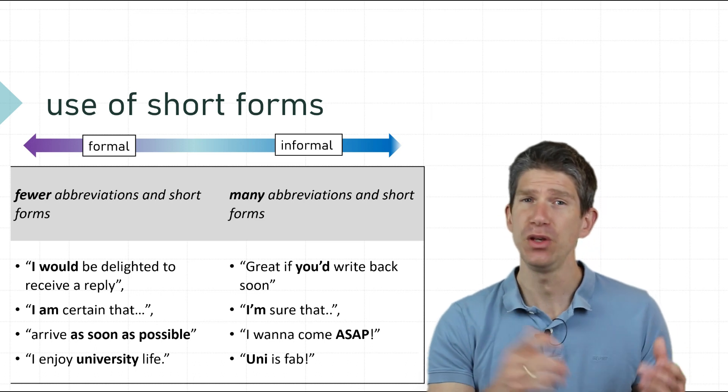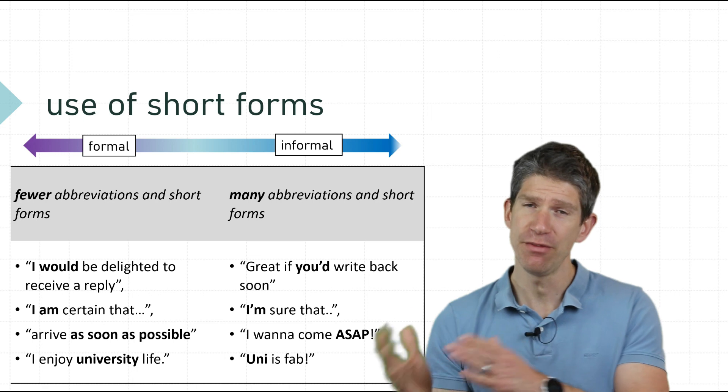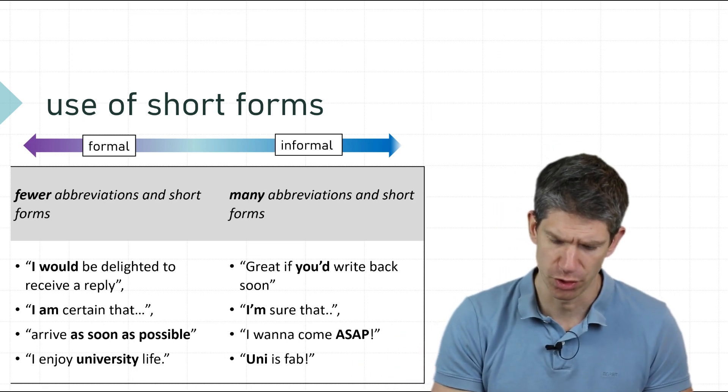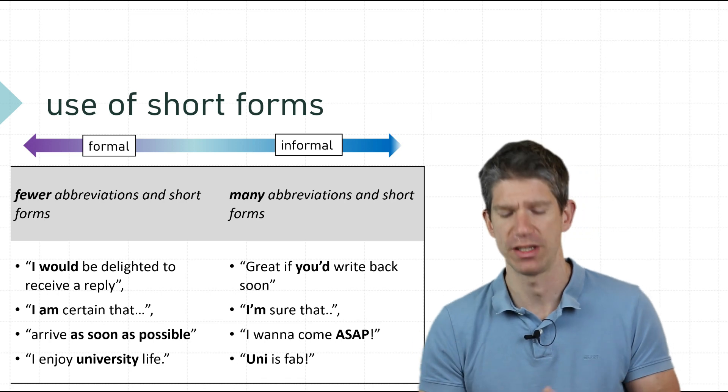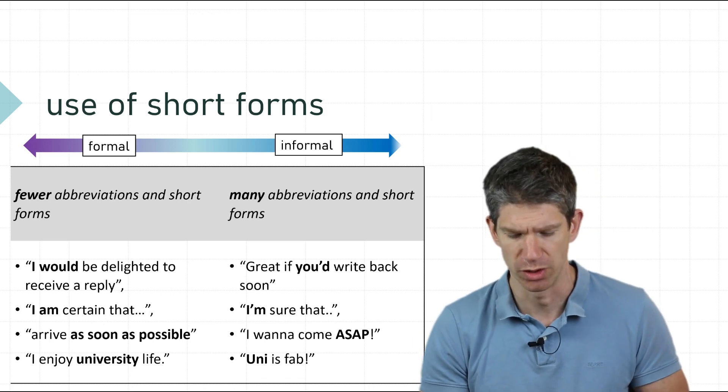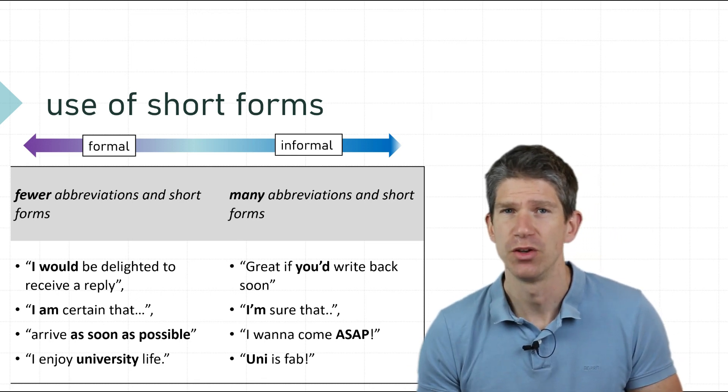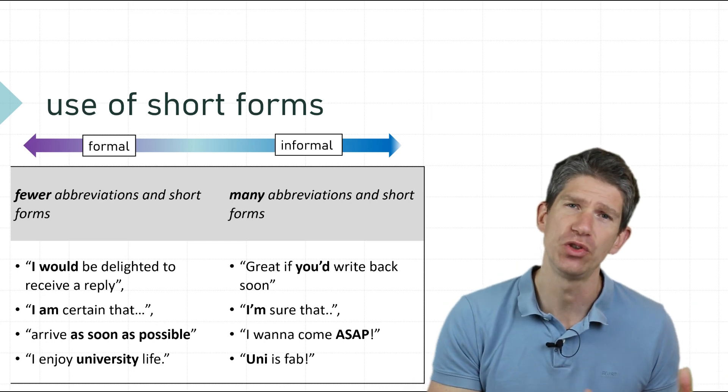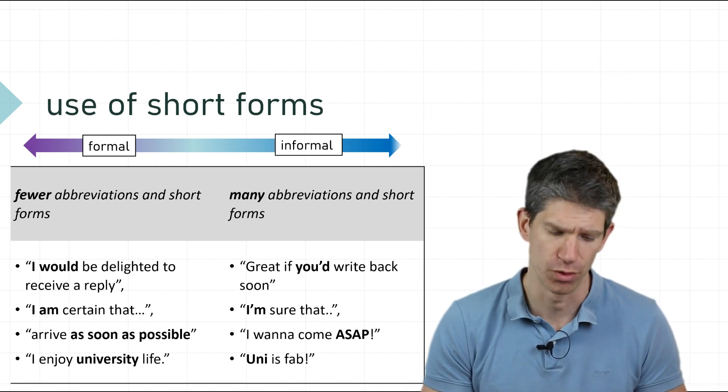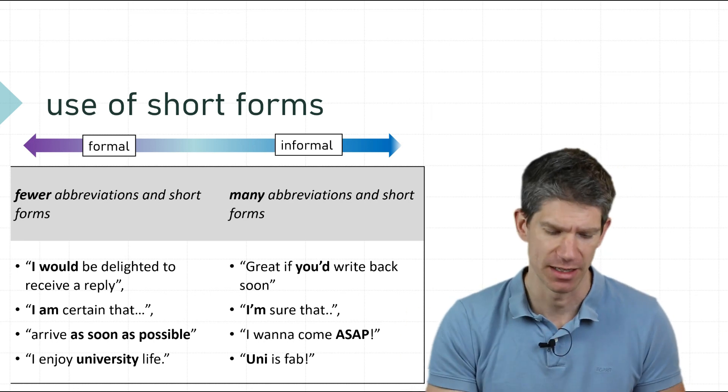Use of short forms: you use fewer abbreviations in formal language. Where in informal language you cut things short and use the apostrophe to make it short - 'Great if you'd write back soon' or 'I'm sure' or 'I want to come ASAP' or 'uni' - you shorten the word. In formal language you usually stick with the long form unless you explain an abbreviation and then use it later on in an academic essay, but generally you do not use as many short forms.